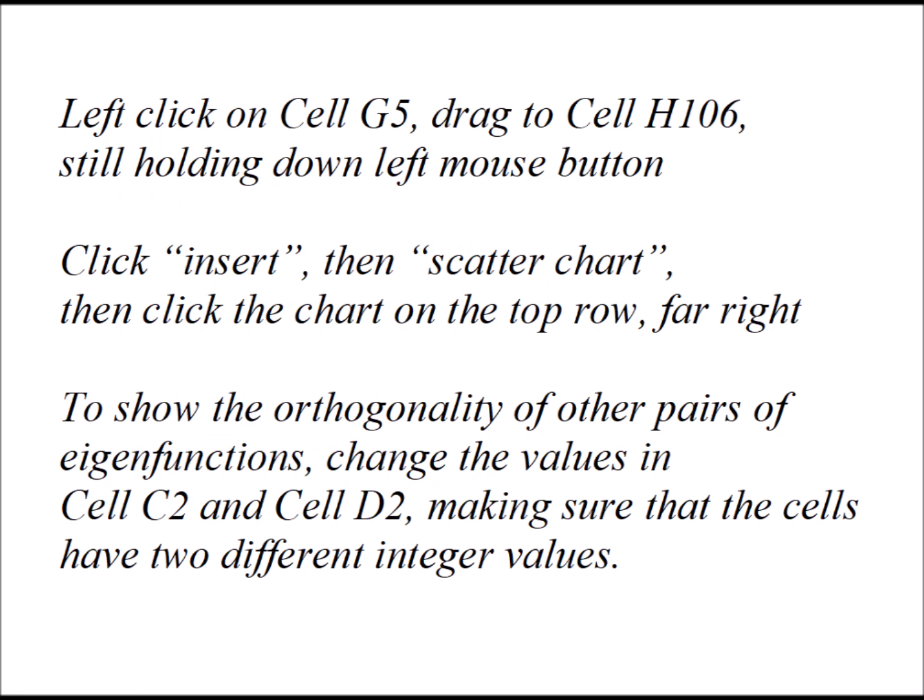So now to visualize this data, similar to what we did before, but now we left click on cell G5. We drag down to cell H106 while we keep holding down the left mouse button. Then we go up to the toolbar at the top. We click insert, then scatter chart. And then we notice that a number of little pictures of charts come up and we want the one that's on the top row to the far right. And then if we want to show the orthogonality of other pairs of eigenfunctions, we can go back and just change the values in cells C2 and D2. Just making sure that they have different integer values. And you'll notice that the chart that you created before will now have updated using the new m sub l data that you put in.